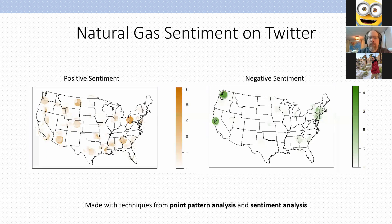I'm going to start at the end of my research by showing some results, so you begin understanding what I mean by sentiment mapping. The maps shown here display people's opinions expressed on Twitter toward natural gas — on the left, spatially located positive sentiment, and on the right, clusters of negative sentiment. These maps were made using point pattern analysis from geography and sentiment analysis from the natural language processing field of computer science.